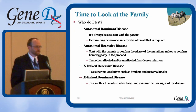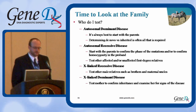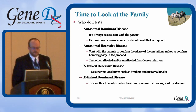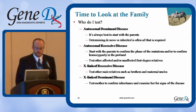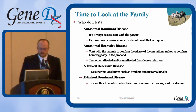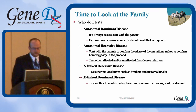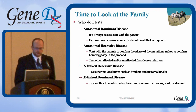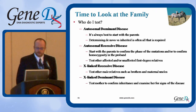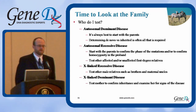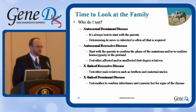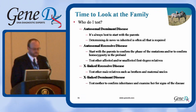Usually a great first approach is just trying to think about who should I test — who could I test in the family to help us determine what this is. For autosomal dominant diseases, it's fairly simple. Usually, you just start with the parents. Being able to determine if something is inherited or de novo is enough.